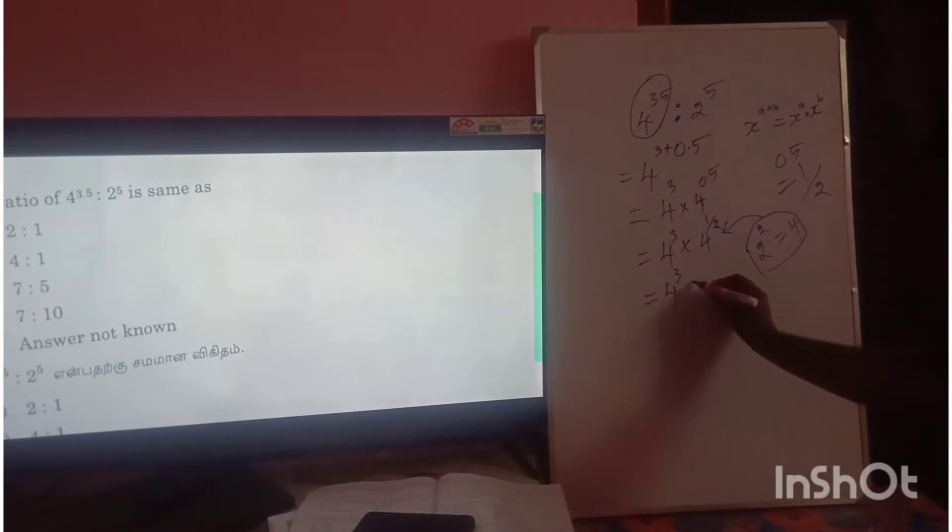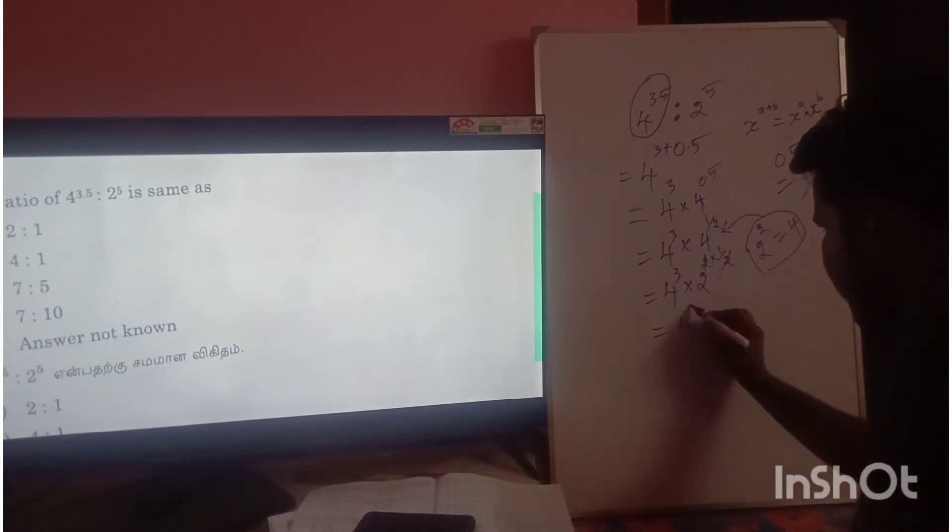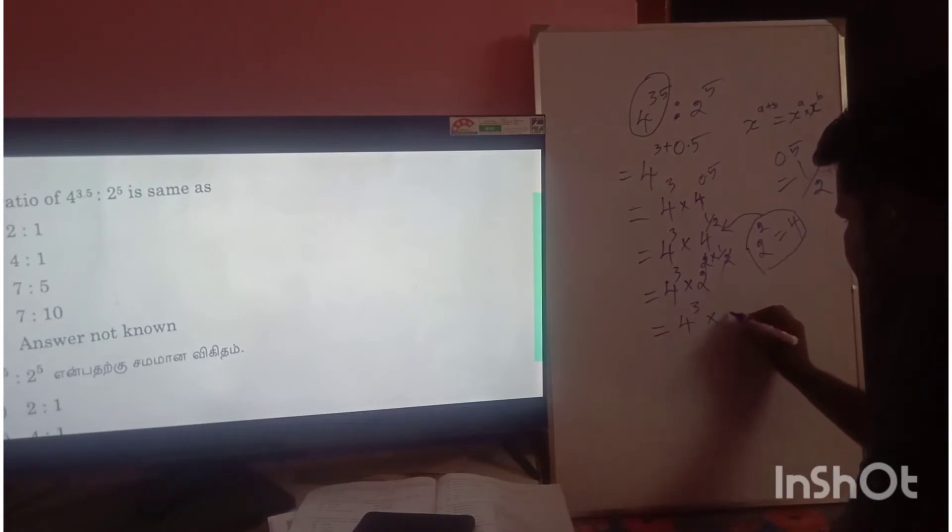Now converting 4 to 2^2, we can simplify. The 2s cancel, giving us 4^3 times 2.